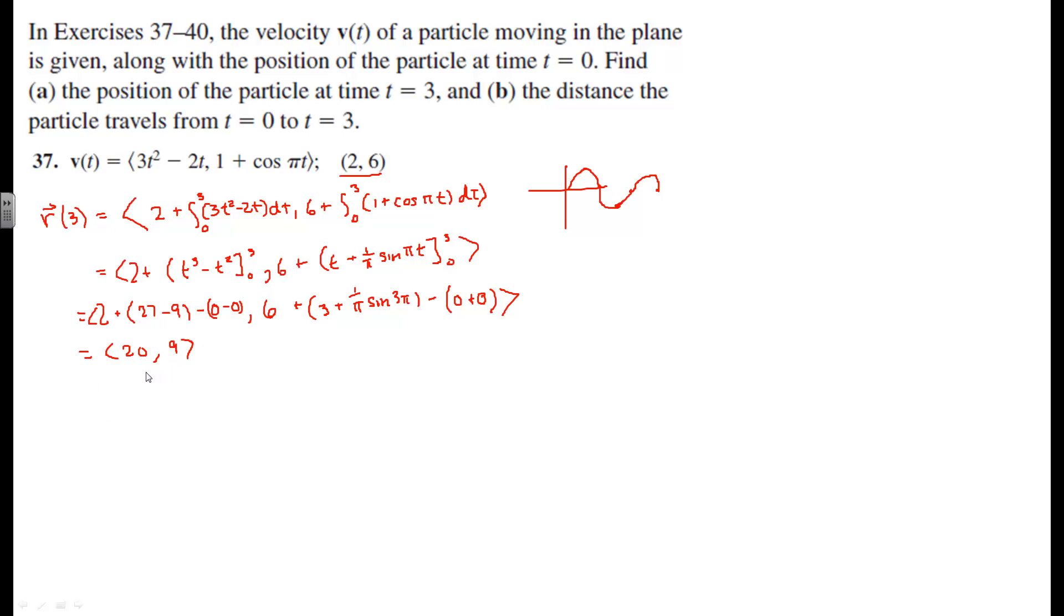Now how far does it travel? Well, the total distance traveled is going to be using the arc length formula from 0 to 3 of the square root of the square of the components of the velocity, which gives us 3t squared minus 2t quantity squared plus 1 plus cosine pi t squared.